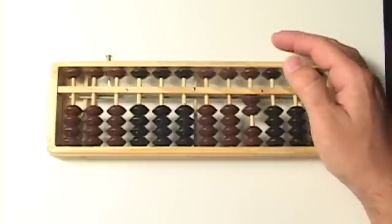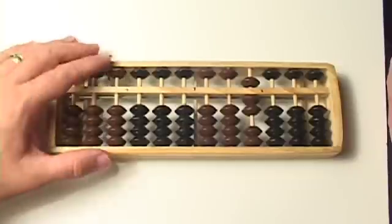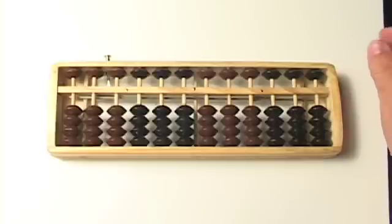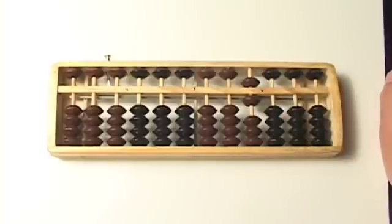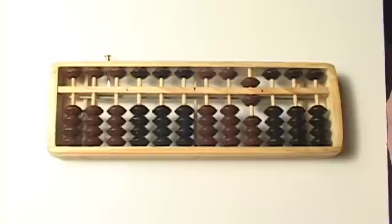Two plus five is seven, and that's what it looks like. Let's do another one, something pretty simple. One plus five. We slide a one up and a five down, and there is our number six. One plus five is six.